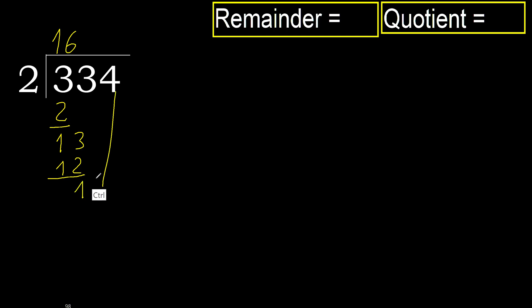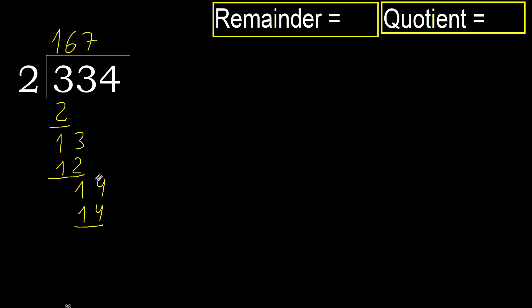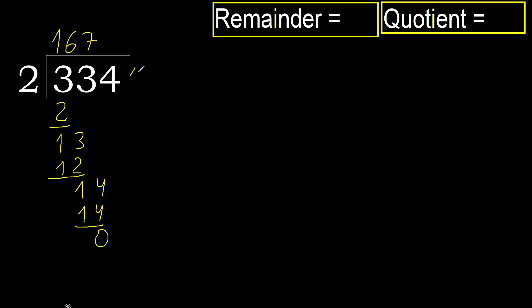Next, bring down to get 14. 2 multiplied by 7 is 14, which is not greater. Ok, subtract. Next — that is not a number, therefore finish.